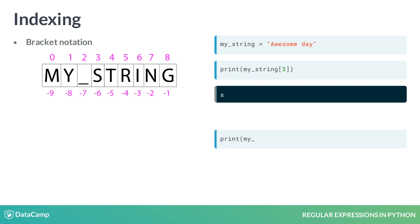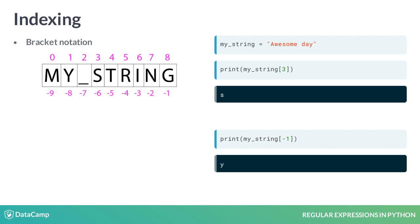We can also indicate indices with negative numbers. If we specify index minus one, we get the last character of the string, as shown in the output.